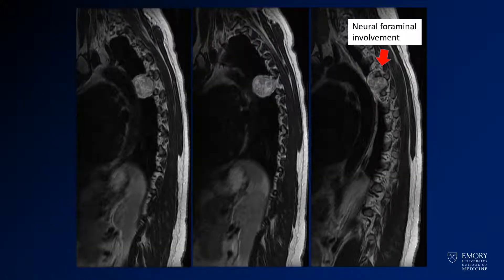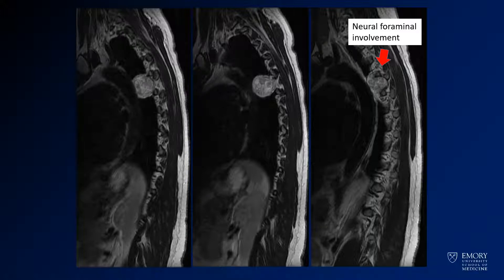Here you see there's some involvement of the neural foramen — expansion of the neural foramen. So on that CT, that neural foramen was larger than the adjacent neural foramen, kind of smoothly remodeled.